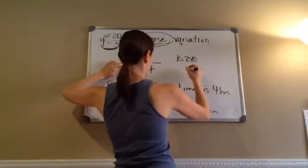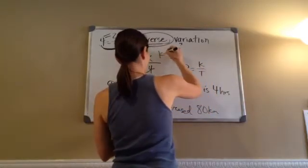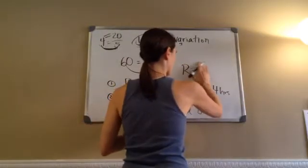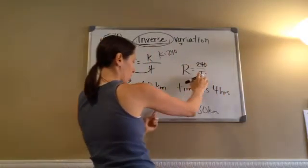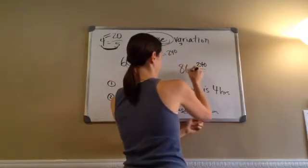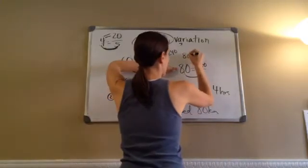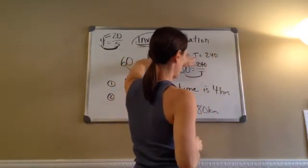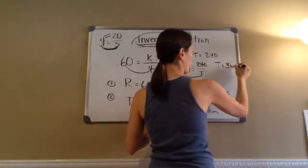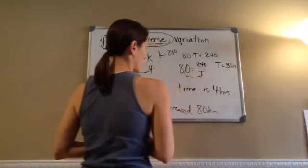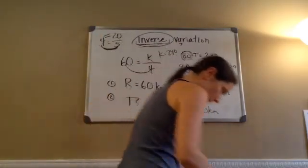Using the equation R equals K over T, with K equals 240: what would be the time required if the rate increased to 80 kilometers per hour? We leave T unknown. 80 times T equals 240. 80 times what equals 240? T equals 3. Because we're doing time, this is 3 hours. You can also multiply across and divide by 80 to get T. And that is Lesson 113. Thank you.